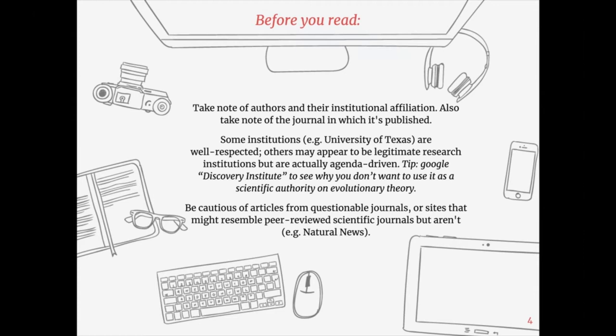For example, Natural News is one of these questionable sources. There are a number of so-called open-source journals on the Internet that will look very peer-reviewed but aren't always. That's why I suggest you use the library — the UAF Rasmussen Library — and the short video I recorded showing you how to find peer-reviewed sources, which is in the resources and reading section.